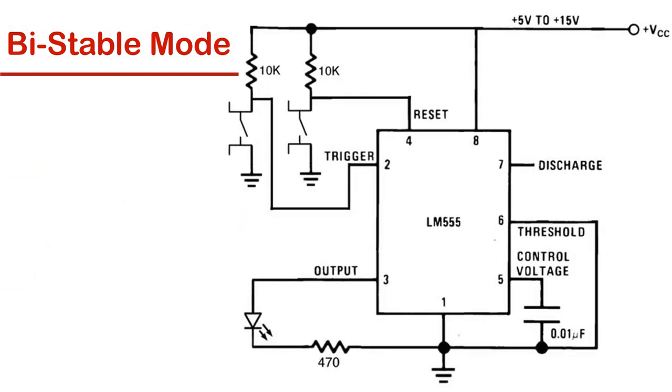In bi-stable mode, it works as an on-off switch. If we press the first button, then it will give a high output. If we press the second button, then it will give the low output.